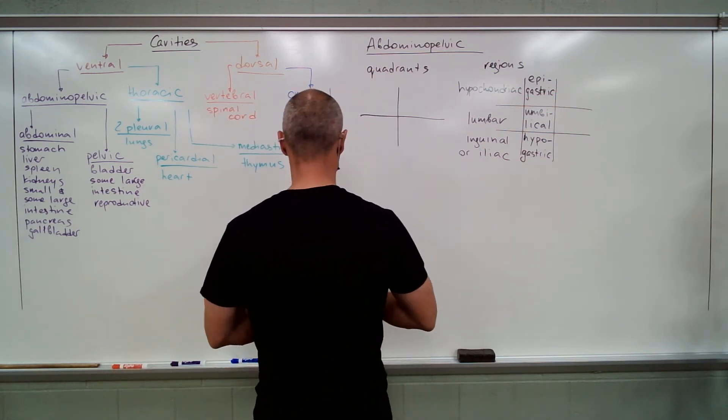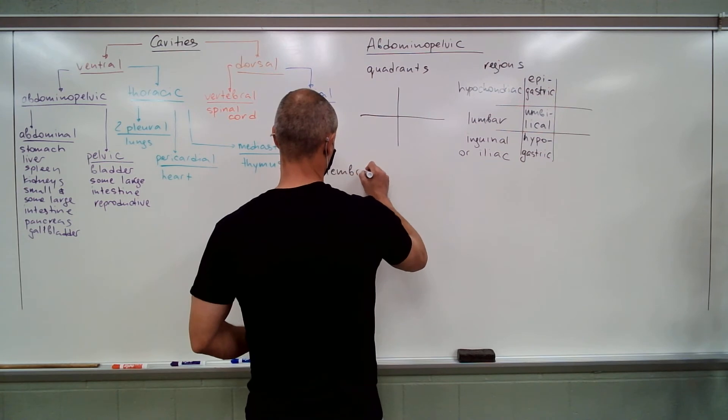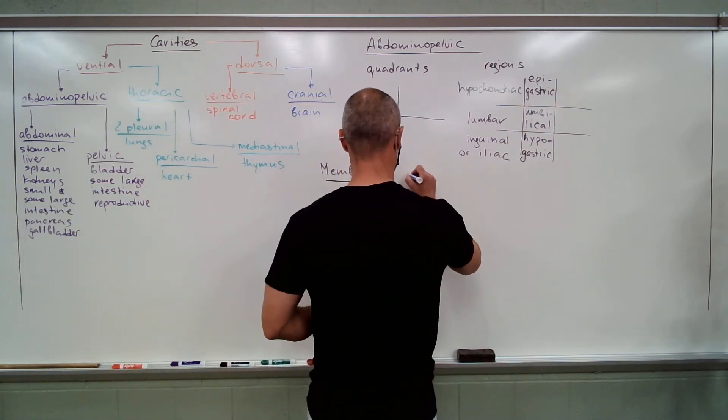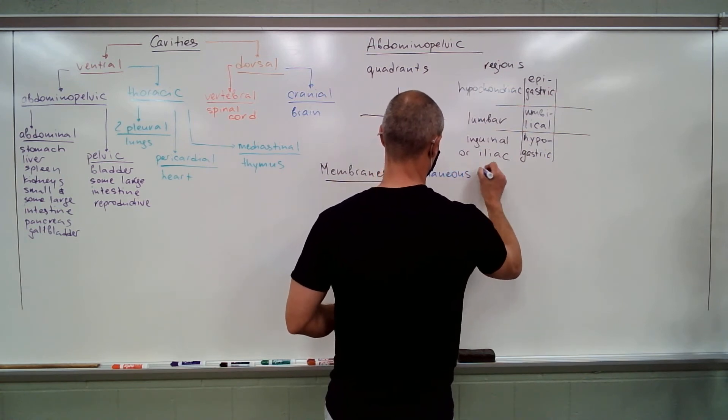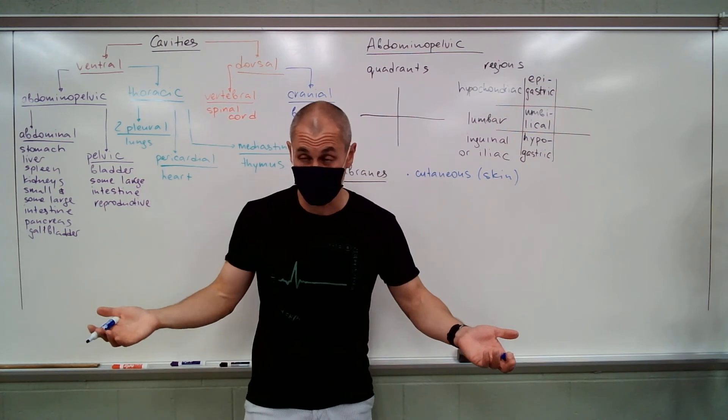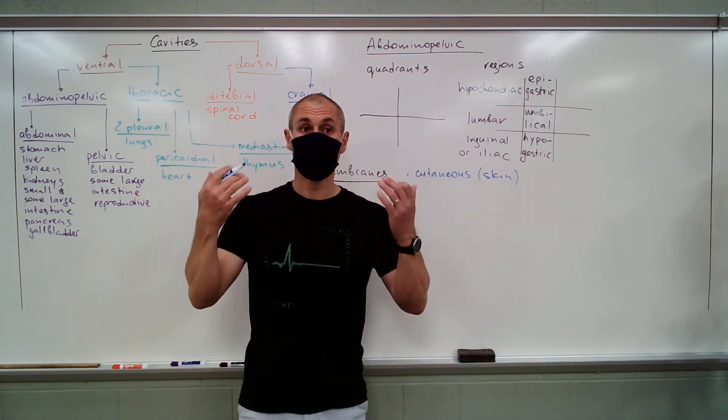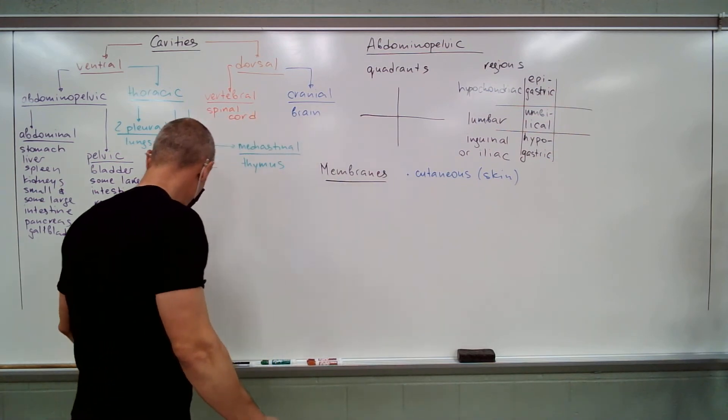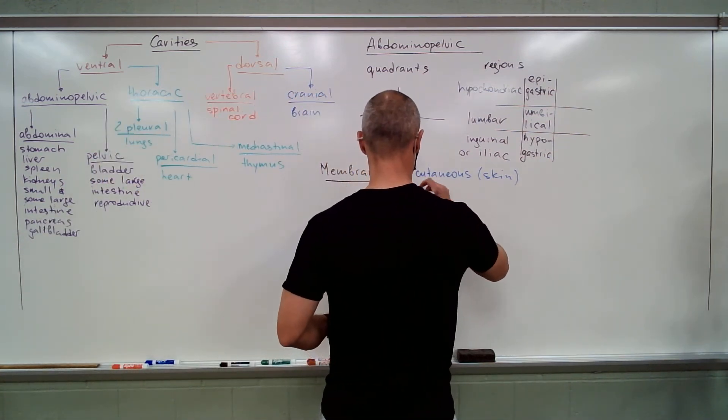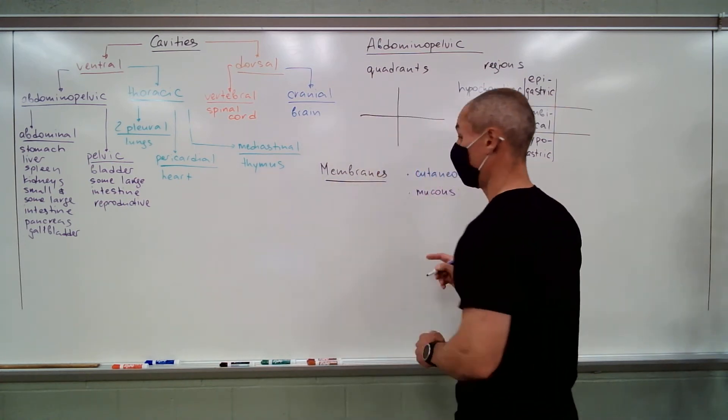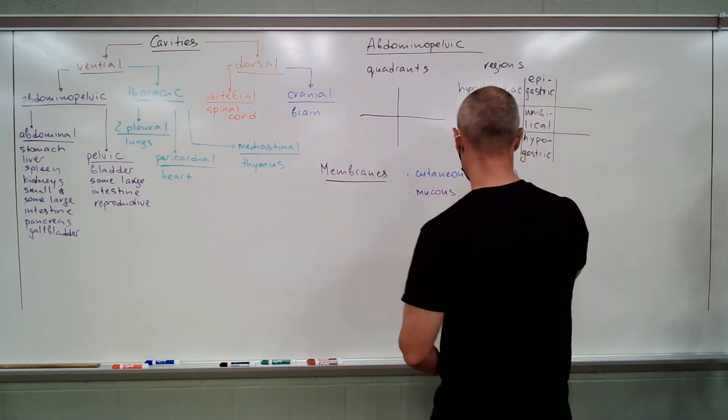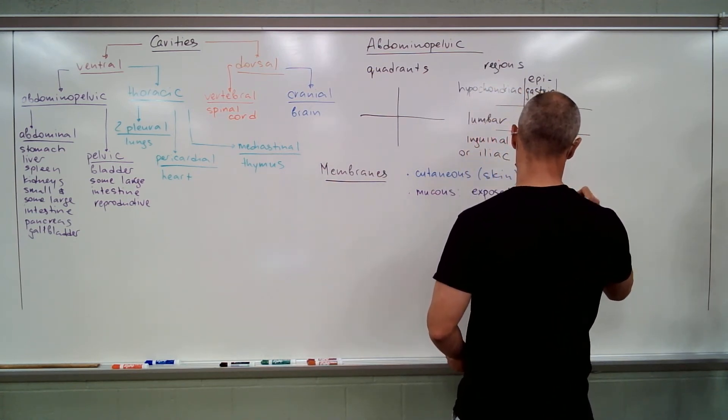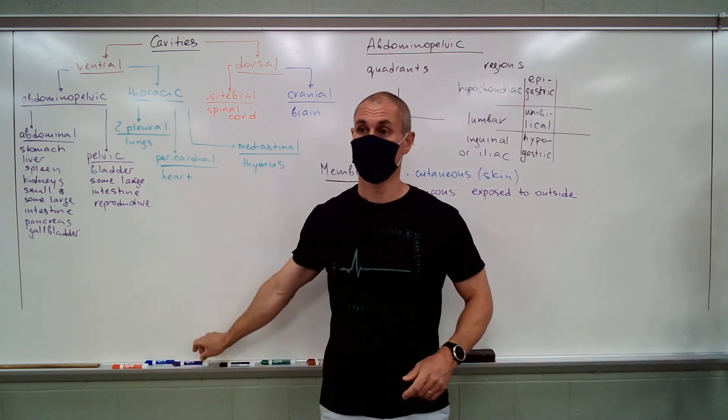The membranes. Three types. You've got cutaneous, which is skin, which is superbly easy. Skin is the cutaneous membrane, period, done. There's no questions. That's it. Mucous membranes. Everything that is not covered by skin exposed to outside. Give me a run.